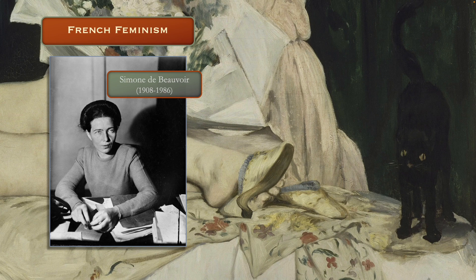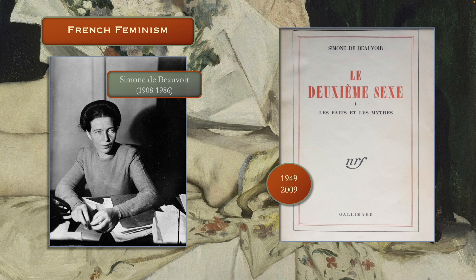It really started with Simone de Beauvoir in 1949 — Le Deuxième Sexe. The interesting thing about this book is it was translated in the early 1950s and had a big impact on the emergence of second wave feminism in the English-speaking world. But there were a lot of criticisms of the English translation — it was not very good, it left out parts of her argument. And it wasn't until 2009 that a new, more scholarly edition of The Second Sex became available.